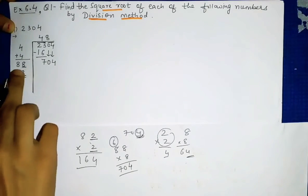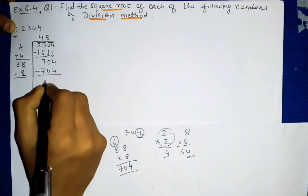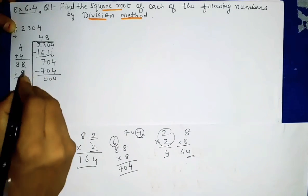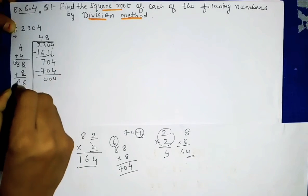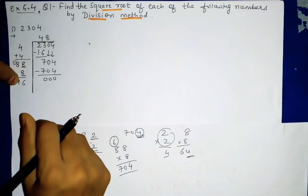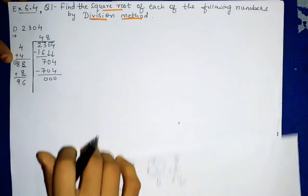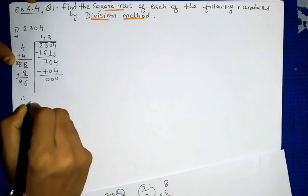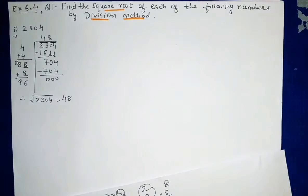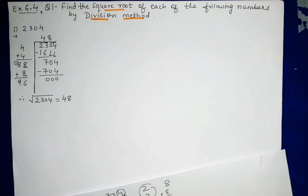On the left side we add, on the right side we multiply and write the answer. 88×8=704. Subtracting gives 000. The division is complete. Therefore, the square root of 2304 is 48. So we write: √2304 = 48. This is the answer to the first one.